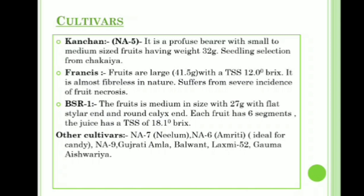Francis has large fruits weighing about 41.5 grams with a TSS value of 12.0 degrees Brix. It is almost fiberless in nature but suffers from severe incidence of fruit necrosis. BSR1 has medium-sized fruits weighing 27 grams with a slight style and round calyx; each fruit has six segments. The juice has a TSS of 18.1 degrees Brix.